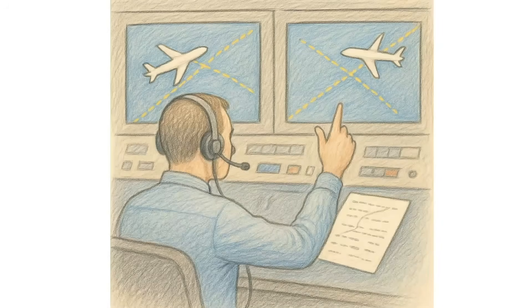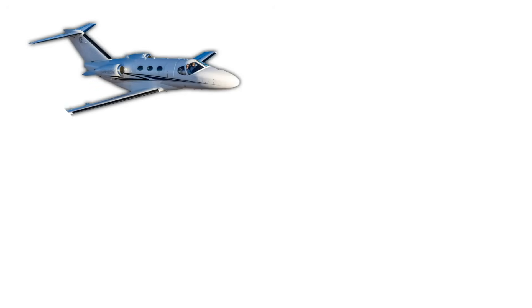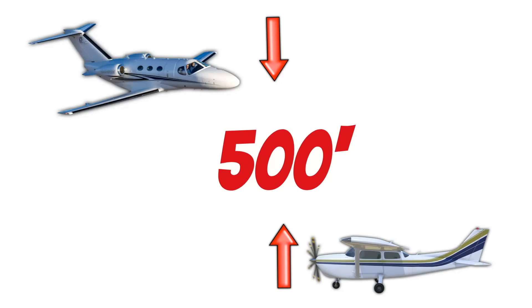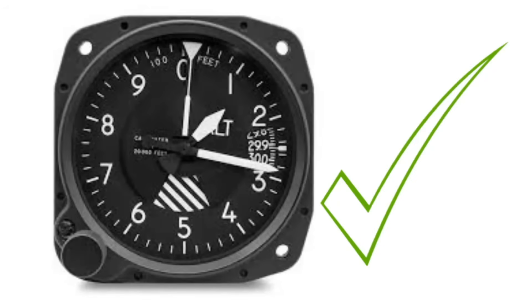Normally, if you're operating under instrument flight rules, ATC will try to keep your aircraft three miles or more away from other IFR aircraft. But in some types of airspace, they only have to provide 500 feet of vertical separation between you and someone else if they're operating under visual flight rules. And if this is the case, you can see how important it can be to set your altimeter correctly and to make sure you're getting regular updates from ATC.